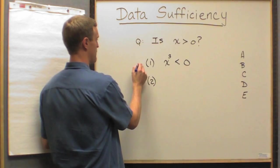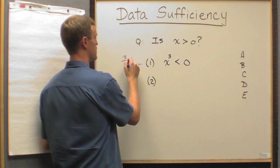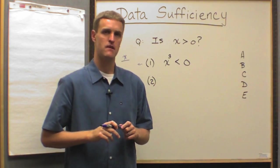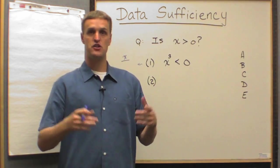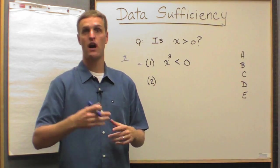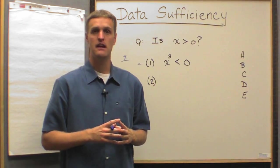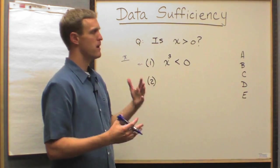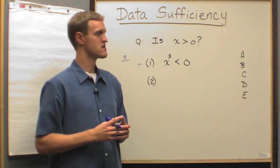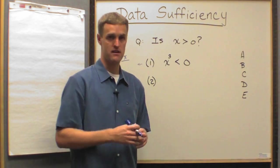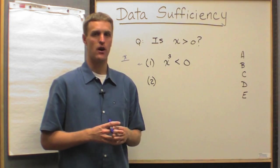So, again, we chase it down the rabbit hole a little bit. We make our lists. What are some possible values of x? And it's testing your knowledge about exponents and some rules that we'll cover during the exponent lesson in future videos. But, nevertheless, what are some possible values of x to where when you cube it, the outcome will be less than zero?